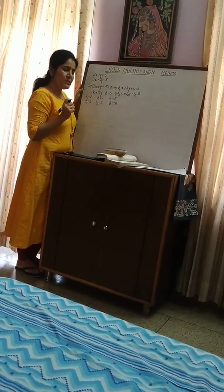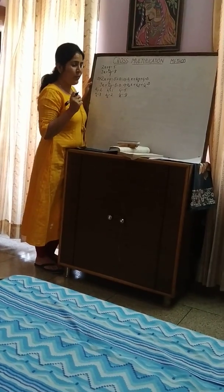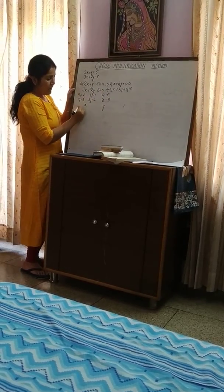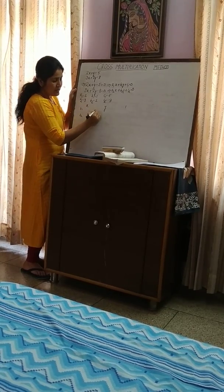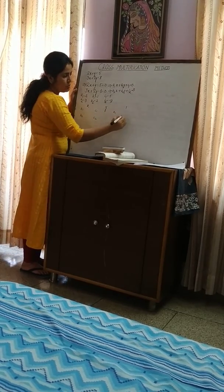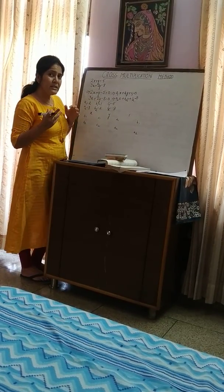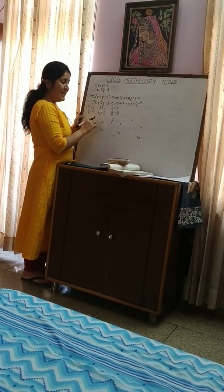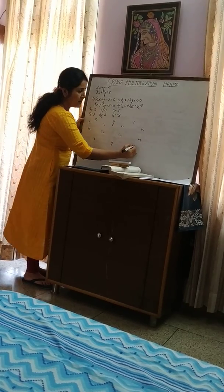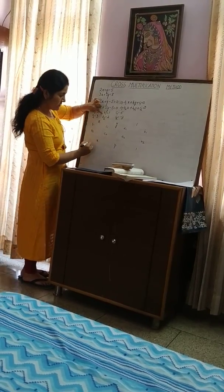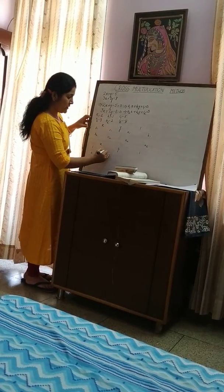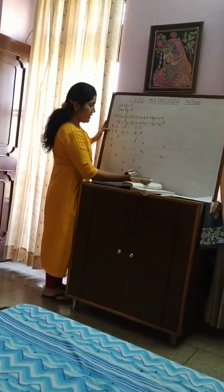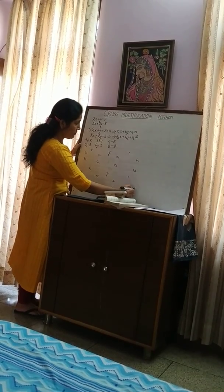To memorize the cross multiplication method for solving linear equations in two variables, the following diagram is very helpful. We write x, y, and 1, and then write b1, b2, c1, c2, a1, a2, and b1, b2. Here a1 is the coefficient of x, b1 is the coefficient of y, and c1 is the constant term. Inserting the values: b1 = 1, b2 = 2, c1 = -5, c2 = -8, a1 = 2, a2 = 3, and b1 = 1, b2 = 2.